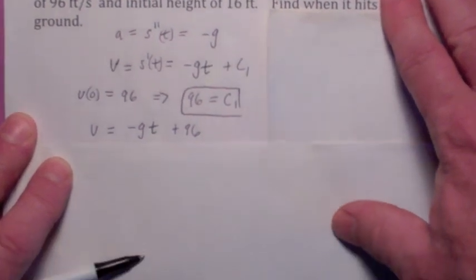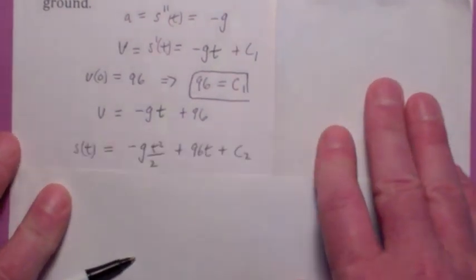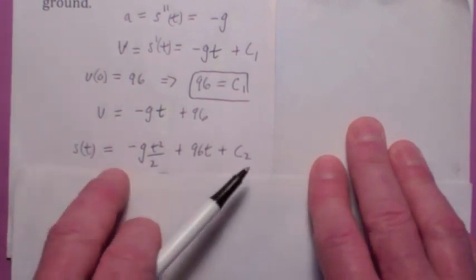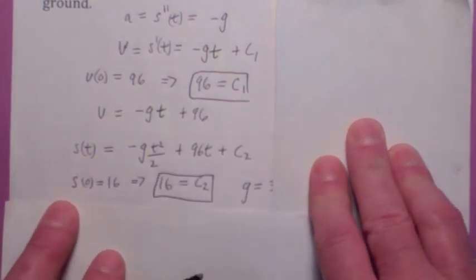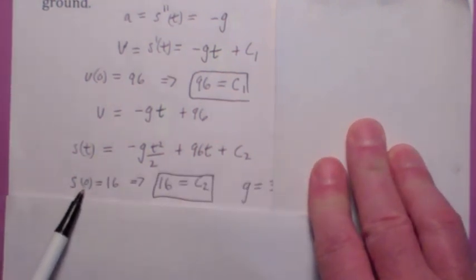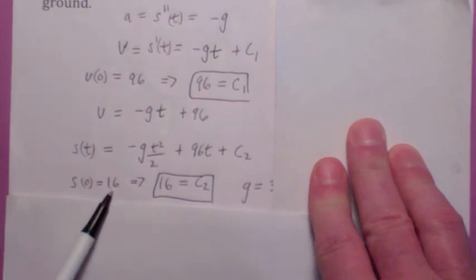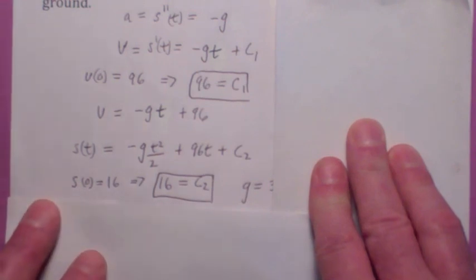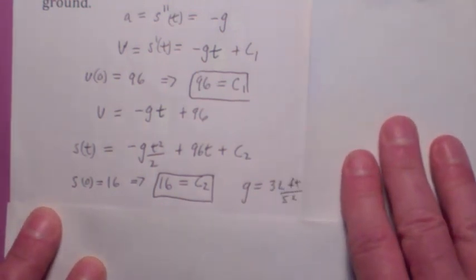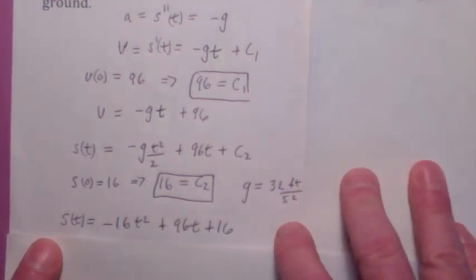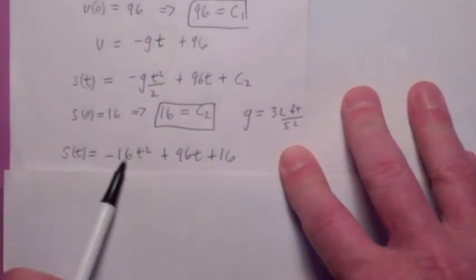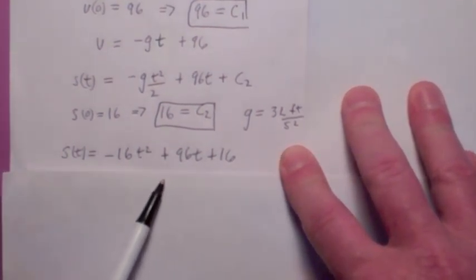Now you can do it again. Now you can go from v of t to s of t by using anti-differentiation again. You get this. And you get a different constant. And you can find that constant by using the fact that the initial height is 16 feet. So plug in zero for t, you get c2 equals 16. And let's also plug in that g is 32 feet per second squared. So you end up with what you were looking for. You have the actual function that gives you the height of the ball above the ground.